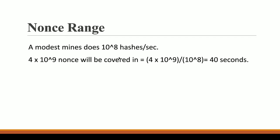Now let's look at another important thing. Let's say a modest miner is able to generate 10⁸ hashes per second — this is just an assumption. Since we have only 4×10⁹ nonces, how much time will it take to consume all these nonces? It will take 4×10⁹ divided by 10⁸, which equals 40 seconds.